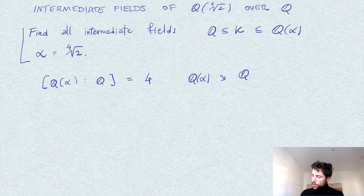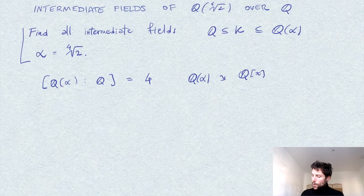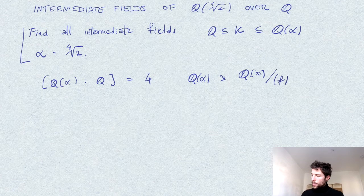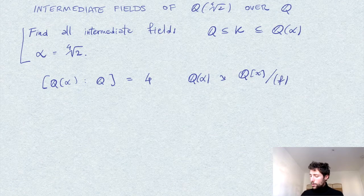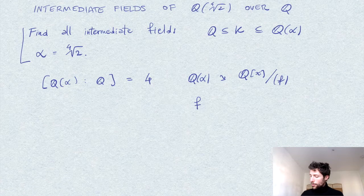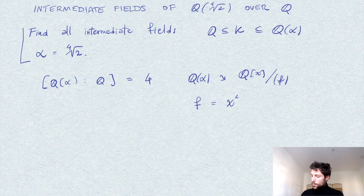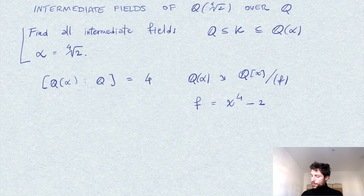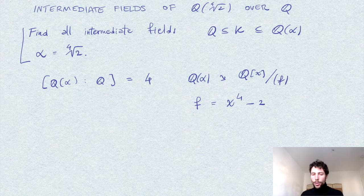...as the quotient of the ring of polynomials in Q by the polynomial f, which is the minimal polynomial for α: x^4 - 2, which is irreducible over Q.